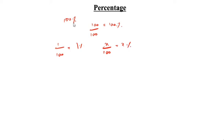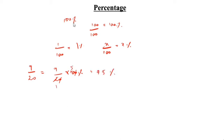Fraction into percentage. How you will write fraction into percentage? Take 9 by 20. We will write it as 9 by 20 into 100 percentage. We need to convert to percentage, so 100 cancels. 1 2s are 2, 5 2s are 10. So, 9 5s are 45 percentage. This is the first method.